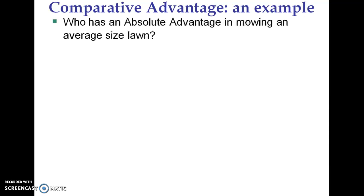So, looking through this, who has an absolute advantage in mowing a lawn? Absolute advantage means fewer inputs. In this case, the input we're looking at to mow the lawn is time. So take a second and think — who takes less time to mow a lawn?